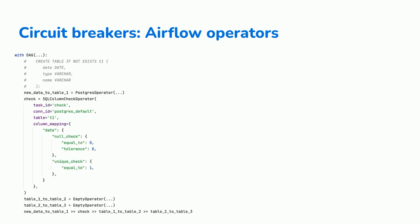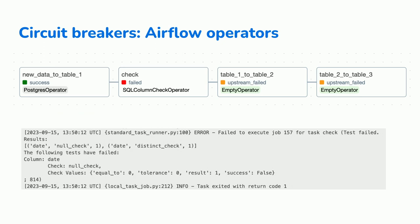Here we're using the SQL column check operator in Airflow. What's happening is we're checking the date column and we expect nulls to be zero and all fields to be unique. If something happens, that task fails, and the other two tasks aren't executed. In this case, we detected the problem in table one and prevented the problem in tables two and three — much better than learning it at the end and having to fix all these tables.